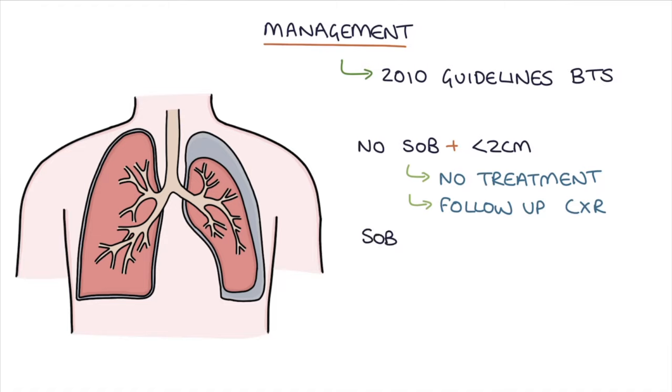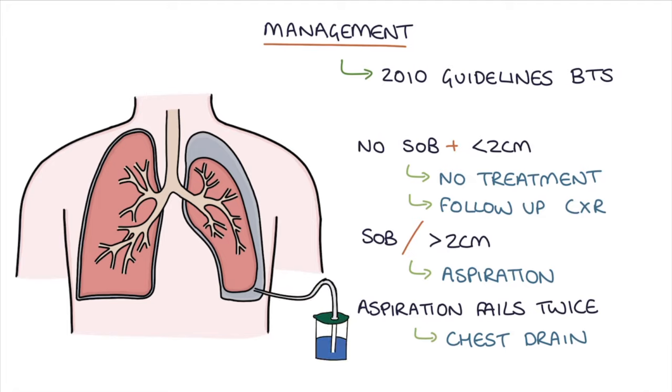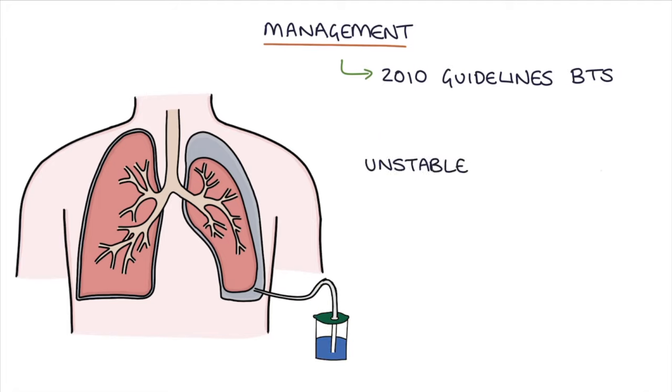If there is shortness of breath or it's more than two centimeters in size on the chest x-ray, then it will need aspiration and reassessment after that. If the aspiration fails twice, then you'll need to do a chest drain. Any patient that is unstable or has bilateral pneumothoraxes or secondary to some other pathology will usually require a chest drain.